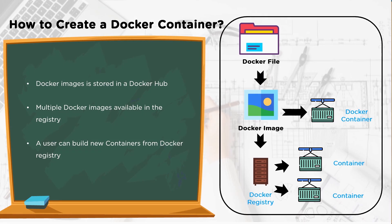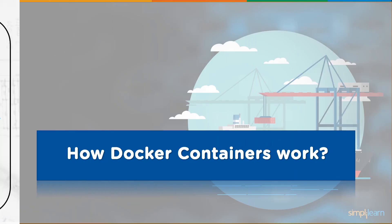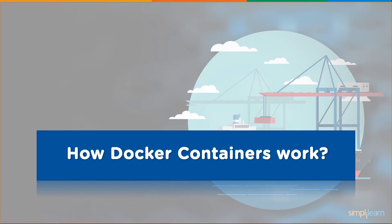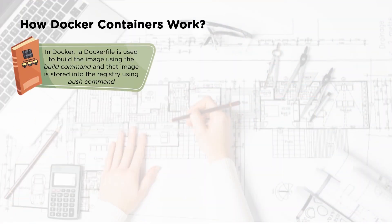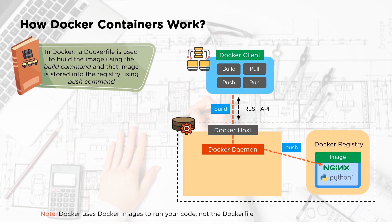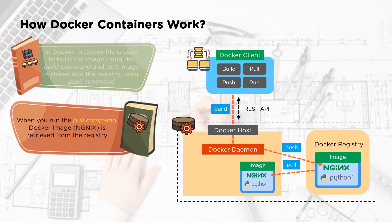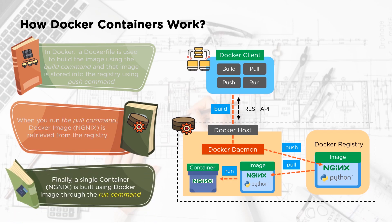Once a Docker image is retrieved from the Docker registry, you can build new containers. A Docker file is used to build the image using the build command, the image is stored using the push command, the pull command retrieves the image from the registry, and a single container is built from the Docker image through the run command.